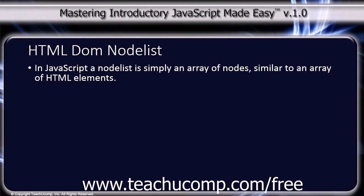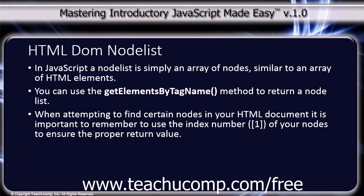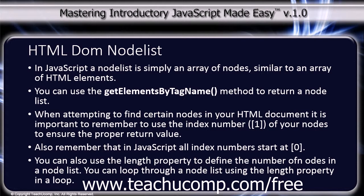In JavaScript, a node list is simply an array of nodes, similar to an array of HTML elements. You can use the getElementsByTagName method to return a node list. When attempting to find certain nodes in your HTML document, it is important to remember to use the index number of your nodes to ensure the proper return value. Also remember that in JavaScript, all index numbers start at zero.